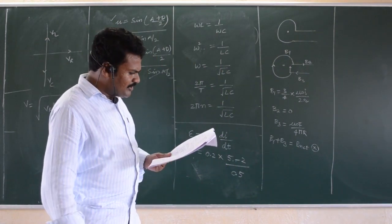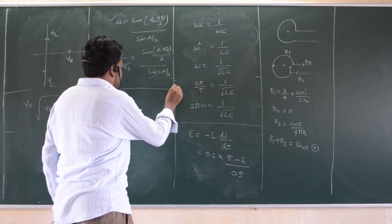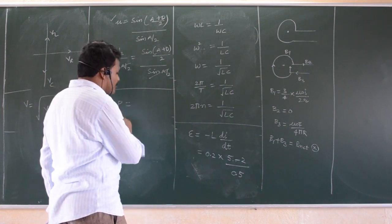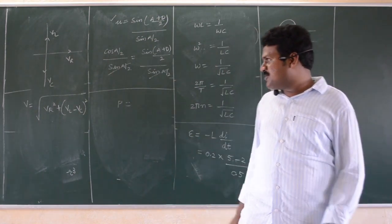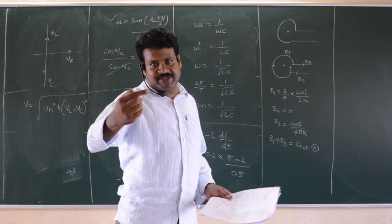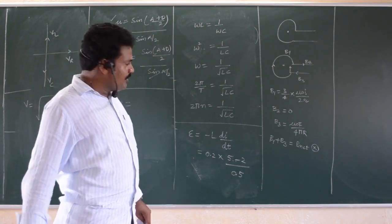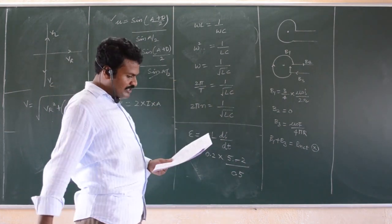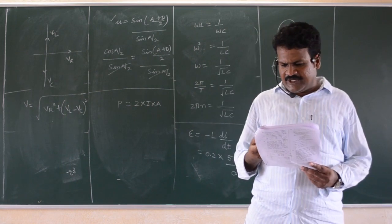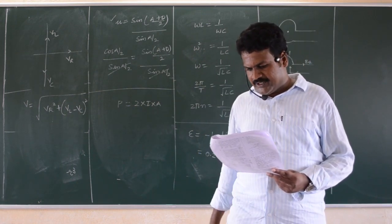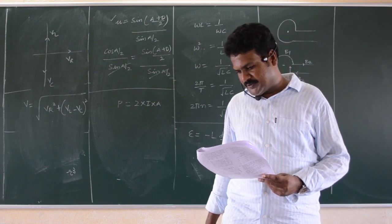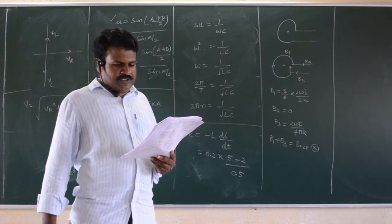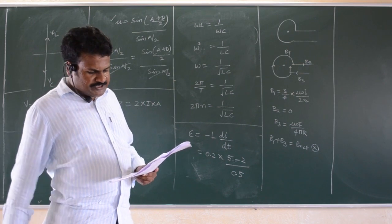The next question asks about momentum imparted on a perfectly reflecting surface — this is from electromagnetic waves. Momentum imparted: if non-reflecting, it is I times A; if reflecting, it is 2 times I times A. Just substitute with the given surface area of 25 into 15 into 20, convert everything into SI units, and you will get the answer.